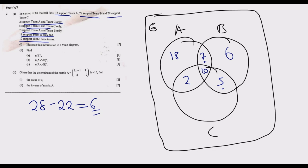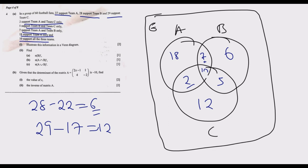Similarly for Team C: the total should be 29. We already know 5 support B∩C, 2 support A∩C, and 10 support all three. So 5 plus 10 is 15, plus 2 is 17. Then 29 minus 17 gives us 12. So 12 fans support Team C only. That completes the Venn diagram, earning the two marks.